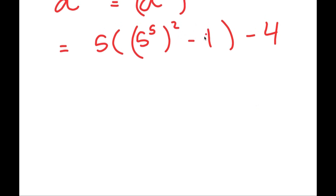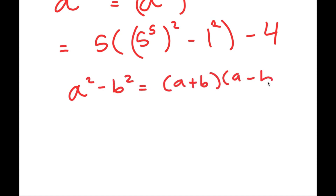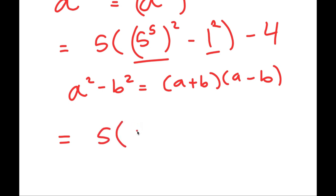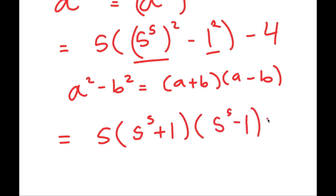Now I'm going to rewrite 1 as 1 squared, so I can use the difference of squares property: a squared minus b squared equals a plus b times a minus b. Here a is 5 to the power of 5 and b is 1. So it turns into 5 times 5 to the power of 5 plus 1, times 5 to the power of 5 minus 1, and then minus 4 at the end.